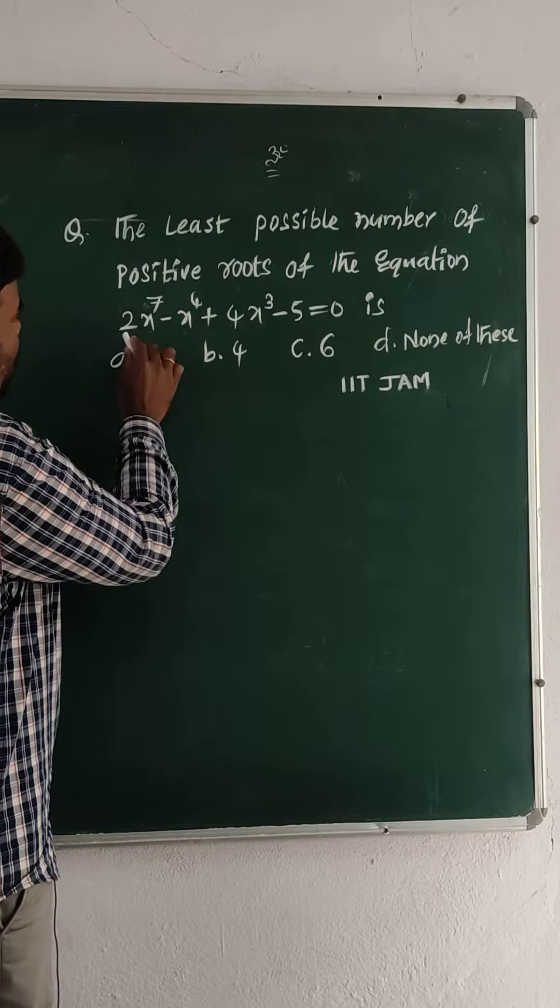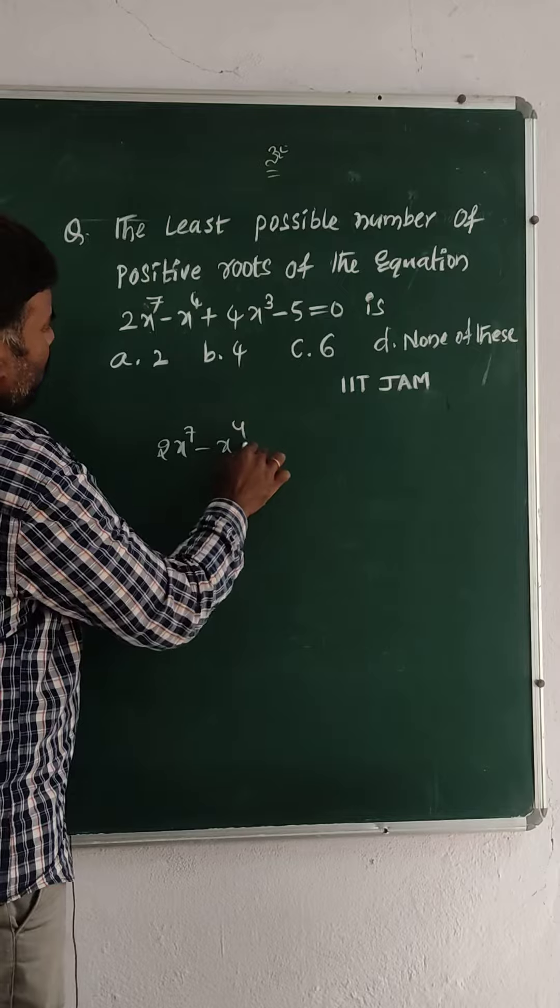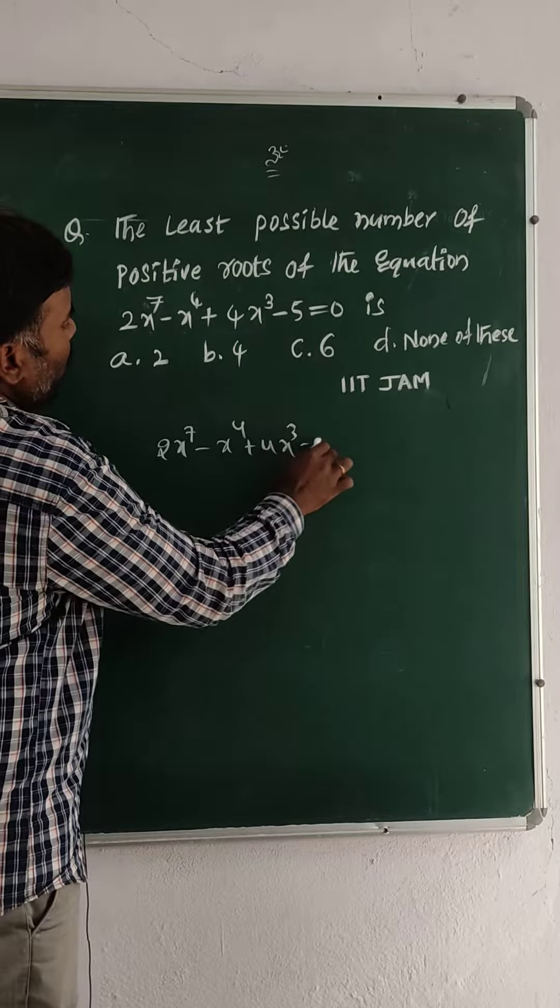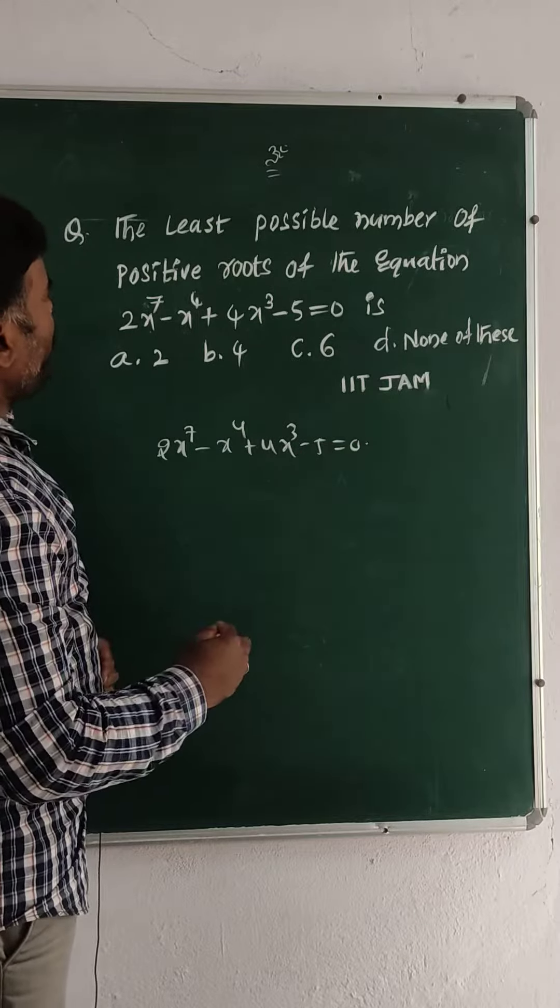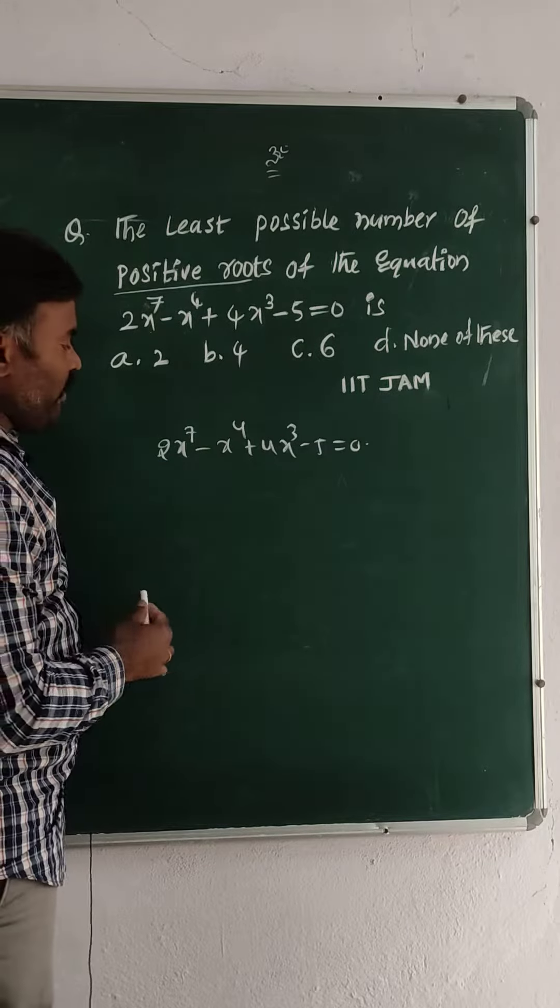Observe friends, here they are given a polynomial of degree 7. So how to find roots? Which roots are required? Positive roots only, the possible number of positive roots only. So how can you verify?